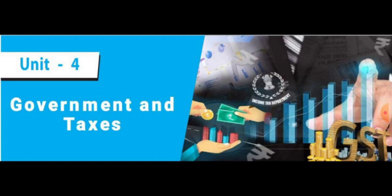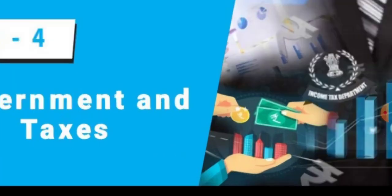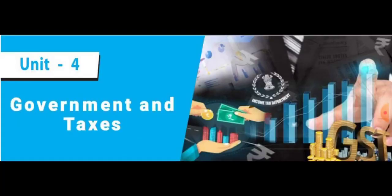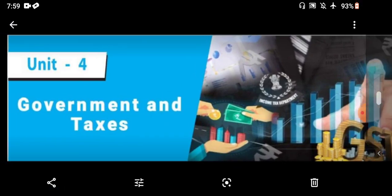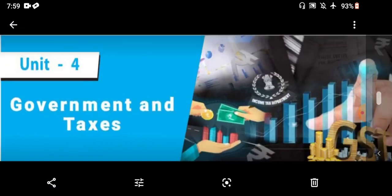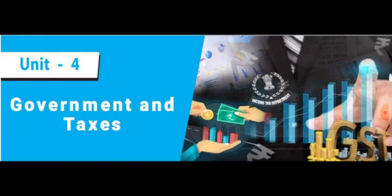There are seven policies. The first one is defense, second is foreign policy, third is conduct of periodic elections, fourth is law and order, fifth is public administration and provision of public goods, sixth is redistribution of income and poverty alleviation, and the last one is regulating the economy.